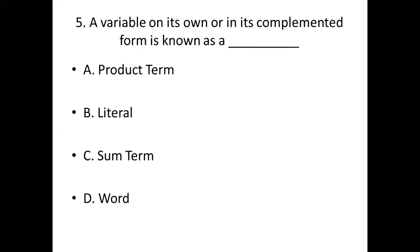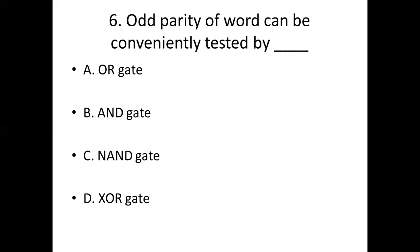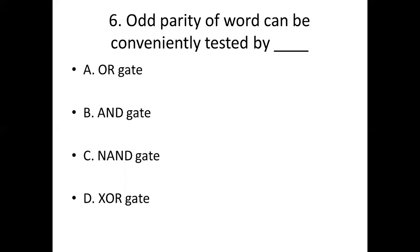Sixth one. OR parity of a word can be conventionally tested by dash. Option A: OR gate. Option B: AND gate. Option C: NAND gate. Option D: EXOR gate. Answer: Option D, EXOR gate.